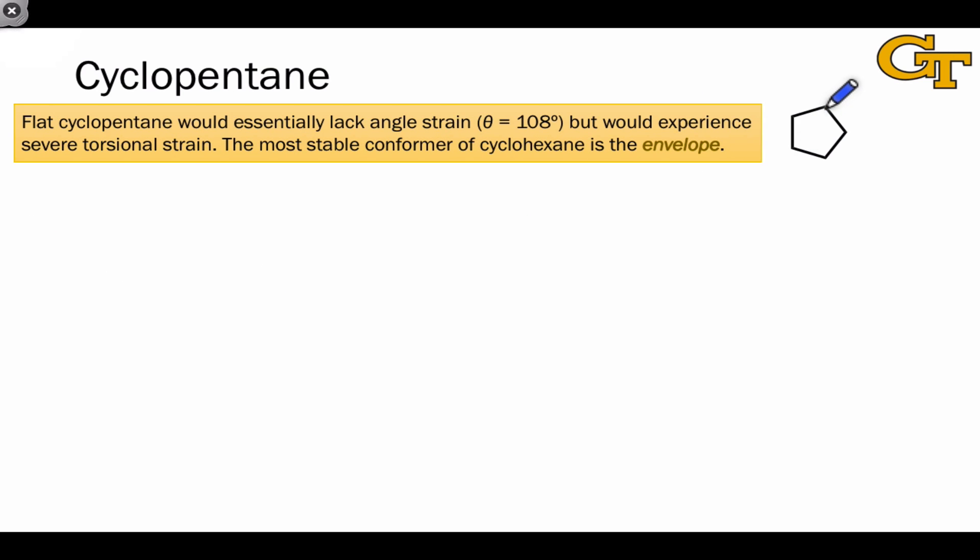Flat cyclopentane is an interesting case to consider because based on the geometry of a perfect pentagon, the angle here for flat cyclopentane would be 108 degrees, which is darn near the sp3 ideal, indicating that the molecule would have very little angle strain. However, as we've seen already, this molecule would suffer from severe torsional strain due to eclipsing of hydrogens at adjacent carbon atoms. That torsional strain is enough of a destabilizing factor for the flat structure as to make it essentially out of reach completely for cyclopentane. It's just too unstable.